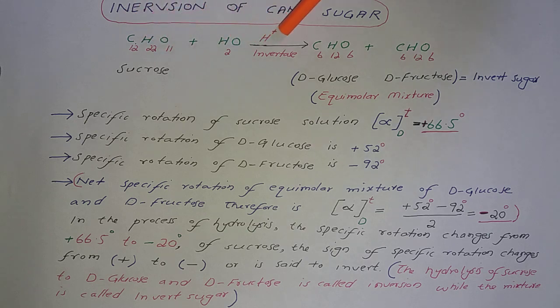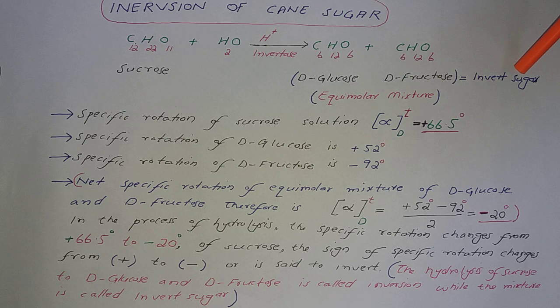Sacrose and acid hydrolysis yields equal amount of D-glucose and D-fructose equimolar mixture. This equimolar mixture is called invert sugar.